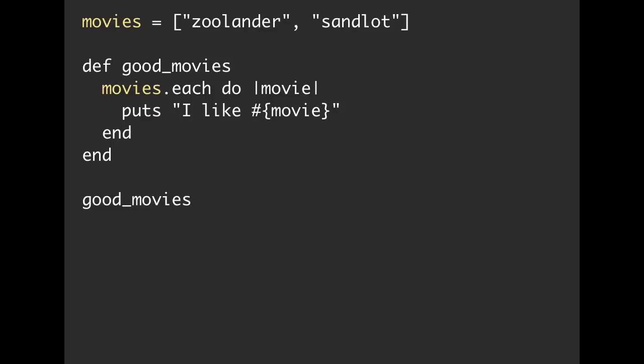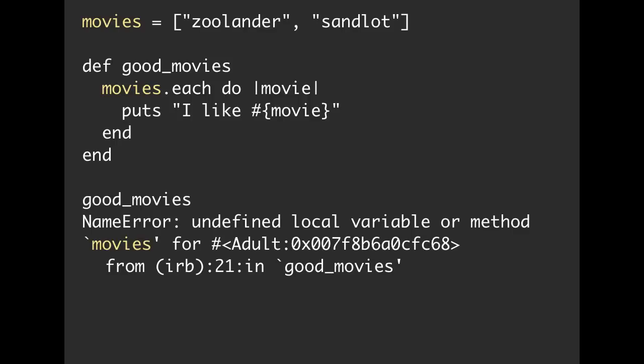Below the method definition, we're actually calling the method. So in your mind, what do you think is going to happen when we run this? I'll give you a hint. It's probably not what you think it is. All right. Time is up. Whenever you call this method, we're going to get an undefined local variable or method error. It says it doesn't know what movies is.